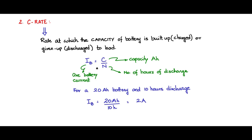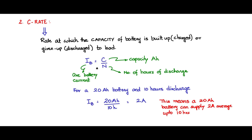Pretty simple. What it means is that a 20 ampere-hour battery is capable of supplying 2 amps average current to the load for up to 10 hours. Note that 2 amp discharge current to the load for 10 hours — so 2 times 10 gives 20 ampere-hours — would ideally be the capacity and discharge current relationship.